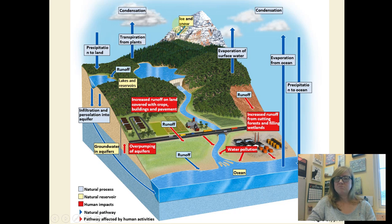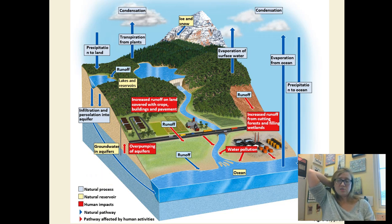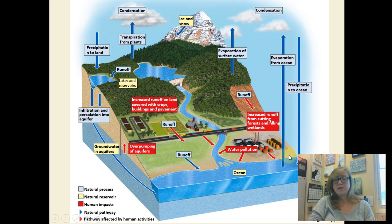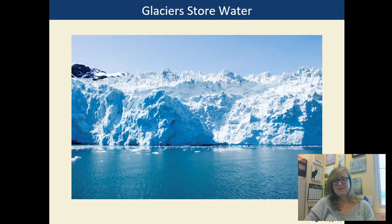Water runs off into rivers, streams, and lakes; some infiltrates and percolates into aquifers as groundwater. But when we have farms, factories, and cities, we pump water out of the aquifer faster than it naturally recharges, so the aquifer can get very low. We also lose more runoff because we've cut down forested areas, and we pollute the water with factory runoff and farm runoff.